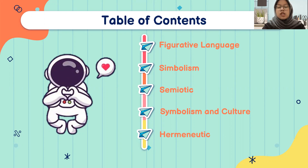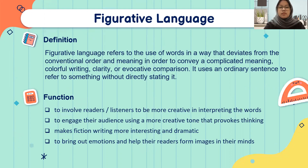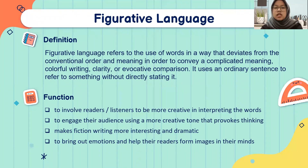The first content is figurative language, the second is symbolism, the third is semiotics, next is symbolism and culture, and the last is hermeneutics. The first one is figurative language.